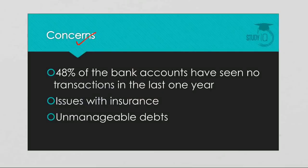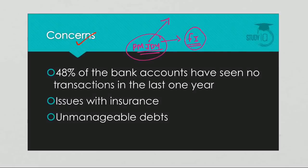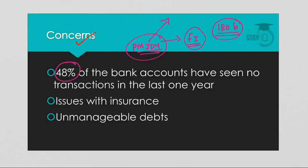Pradhan Mantri Jan Dhan Yojana is a flagship financial inclusion program of the government. The program was successful in ensuring universal access to bank accounts and India now has 1.8 billion bank accounts. But the problem is that among these accounts, around 48% have seen no transaction in the last one year — it is merely an opened bank account with no financial inclusion. Financial inclusion happens only when there are transactions in the bank account and a person actively uses it.